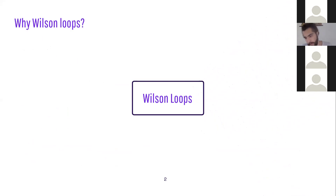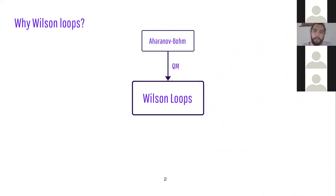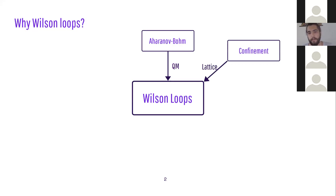We start with the most basic question: why do we care about Wilson loops? Mainly because they are connected to many interesting physical features of gauge theories. The first contact we have with Wilson loops is the Aharonov-Bohm effect in quantum mechanics, where we follow a particle under a gauge field, take the holonomy, and see it reflects as a phase on the state of the particle. Wilson loops are also interesting in the context of confinement in lattice gauge theories, because they are non-local operators sensitive to the IR physics of these theories.